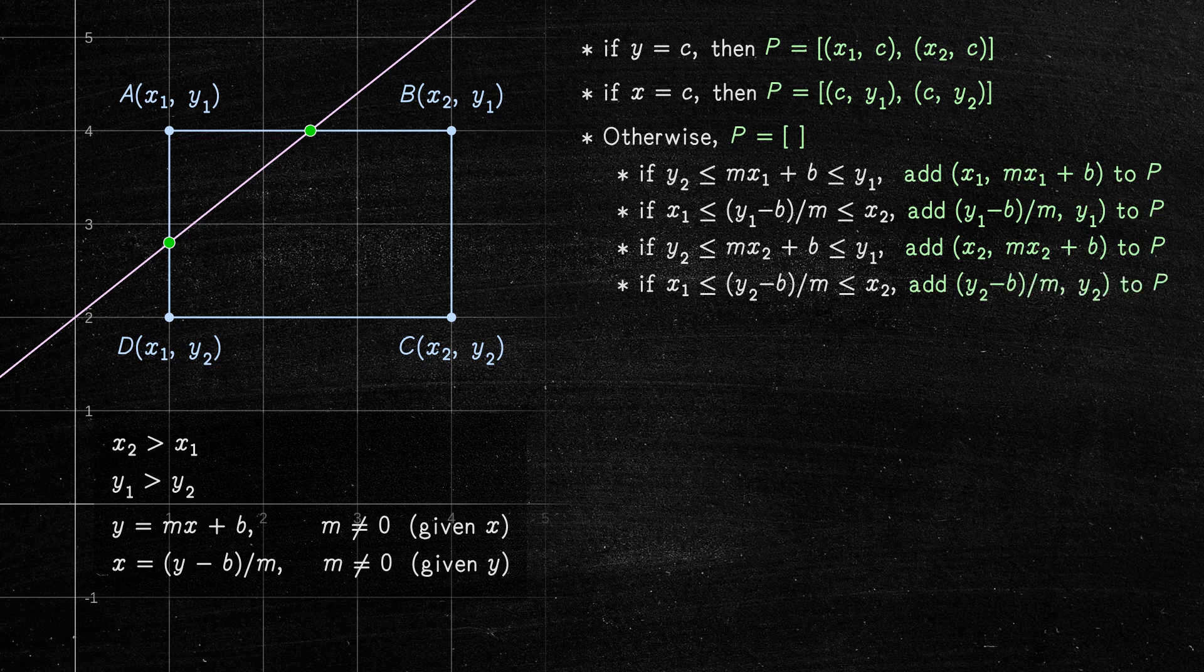Now, we need to check if the line intersected the corners of the rectangle. This means that we may have repeated points in P. Let n be the length of P.